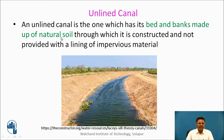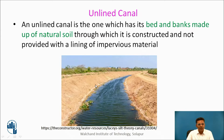What is an unlined canal? An unlined canal is one which has its bed and banks made up of natural soil through which it is constructed and not provided with a lining of impervious material. We can see this canal made up of natural soil which is compacted, but there is no lining provided to reduce seepage.